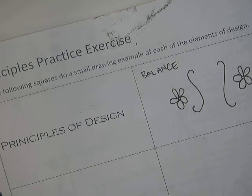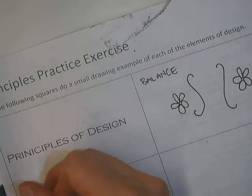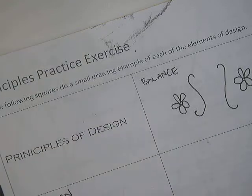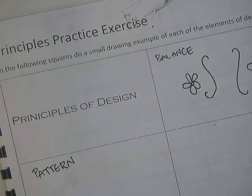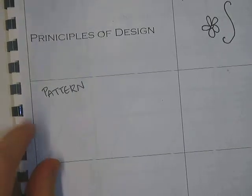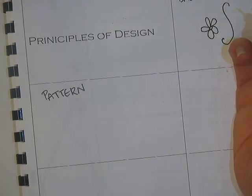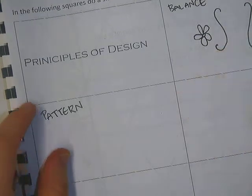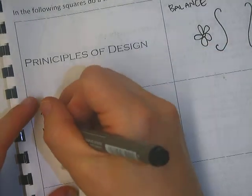Okay. There is also a pattern. Pattern is a repetition of an element of art. So let's see, a checkerboard, for example, is a pattern.